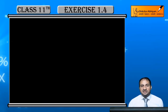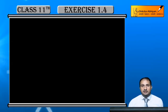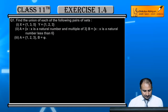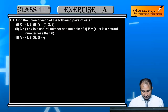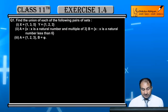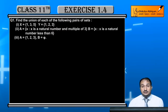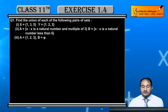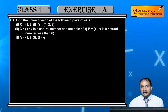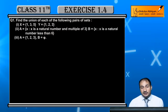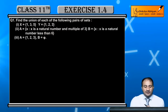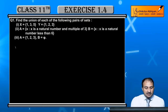Now students, we will start the fourth exercise of the chapter. The first question is: find the union of each of the following pairs of sets. There are a total of three pairs. We will start with the first part.